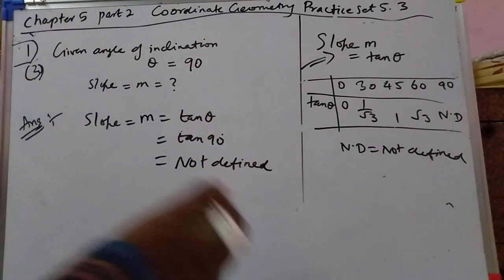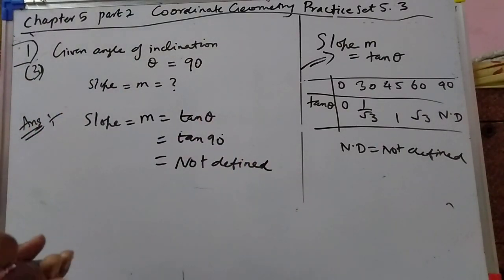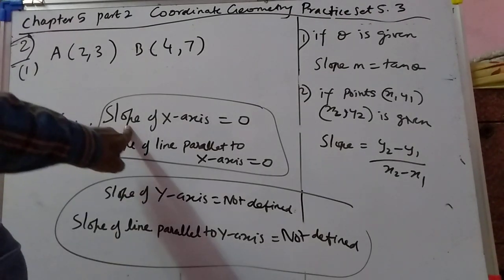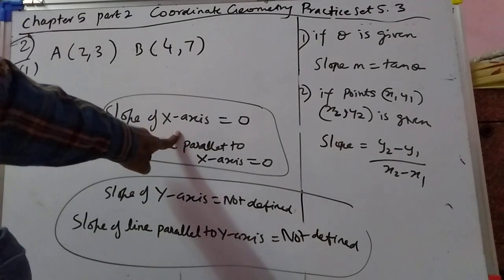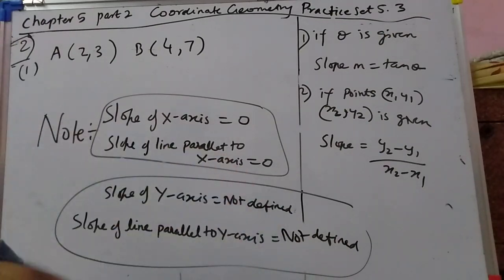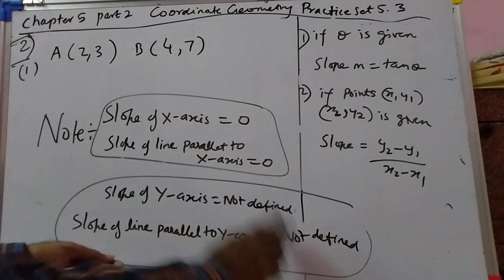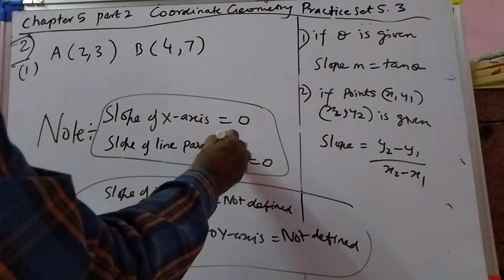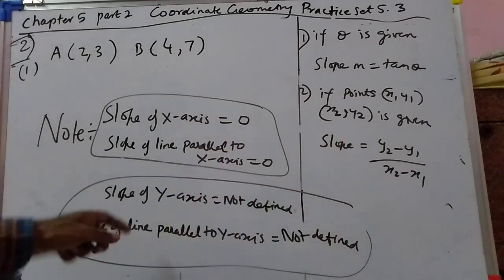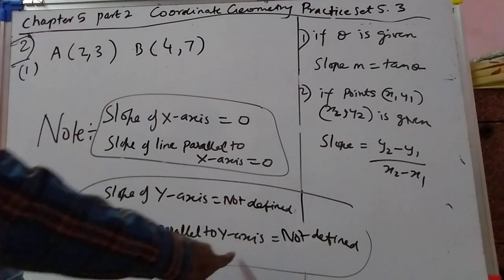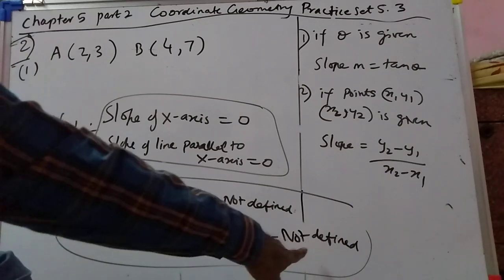Next we will do the second problem. Slope of x-axis is 0. Slope of a line parallel to x-axis is also 0. Slope of y-axis is not defined. Slope of a line parallel to y-axis is not defined.